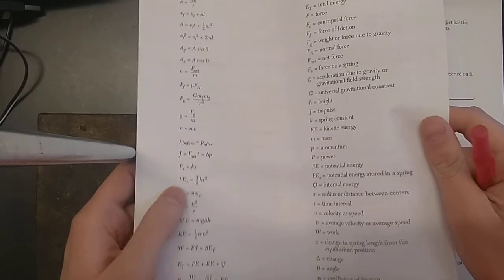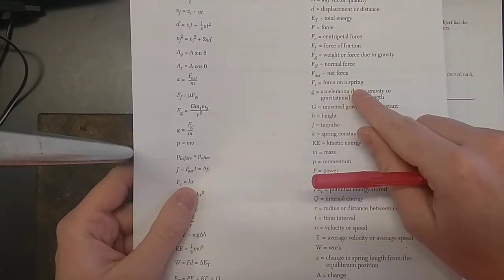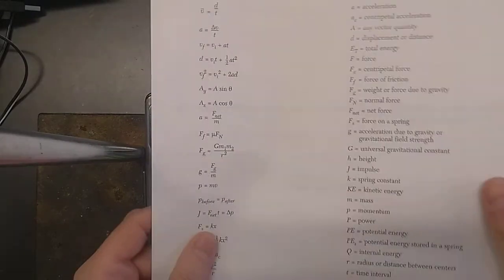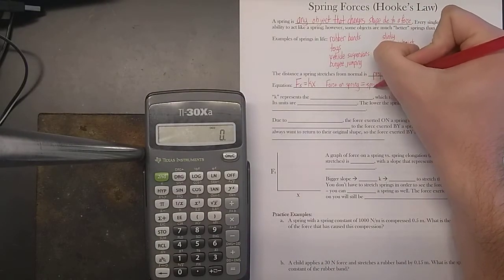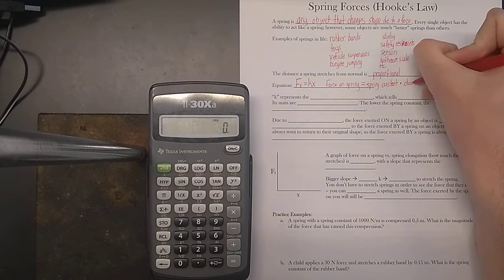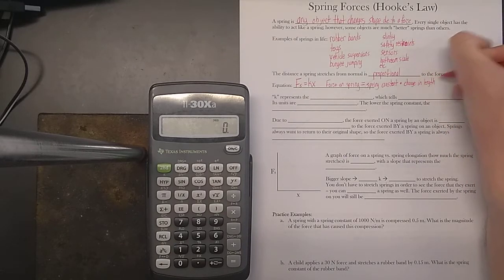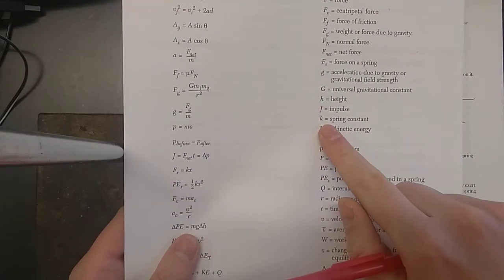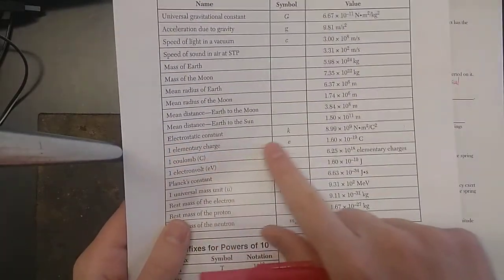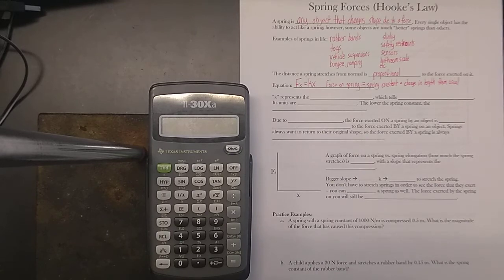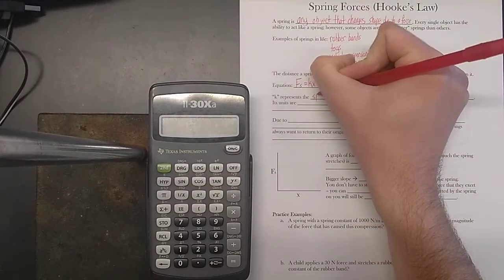Looking at what the variables stand for in that equation: Fs is the force on a spring, which is equal to the product of k, the spring constant, times x — the change in spring length from equilibrium position, or the change in length from its usual length. Note that this spring constant is symbolized by k. There are other k's in physics — do not confuse them; those are for later in the year.